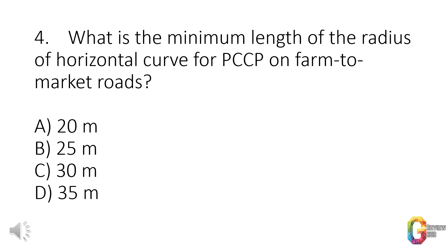Question 4. What is the minimum length of the radius of horizontal curve for PCCP on farm-to-market roads? a. 20 meters. b. 25 meters. c. 30 meters. d. 35 meters.